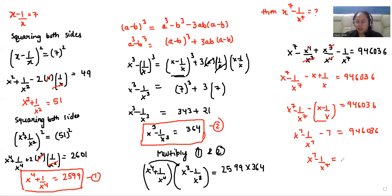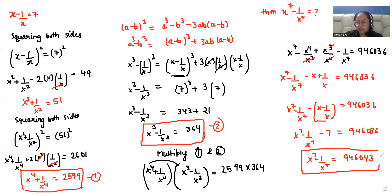After adding 7, we get 946043. So the value of x power 7 minus 1 over x power 7 is 946043. I hope it's clear and easy to solve. If you find it useful, please give us a thumbs up and do subscribe to our channel. Thank you.